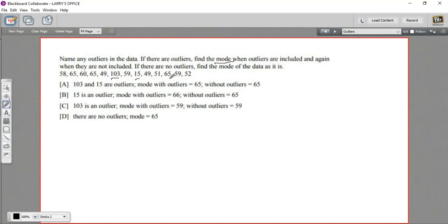So it looks like our data is bunched in the 50s and 60s, but the 15 would be far away from that, and the 103 would be far away from that. So I'm going to say 103 and 15 are outliers.